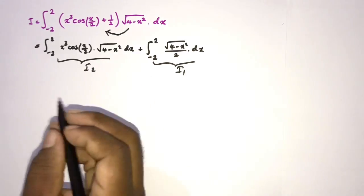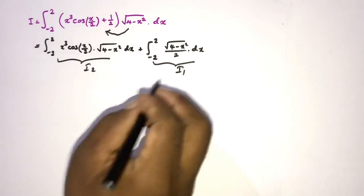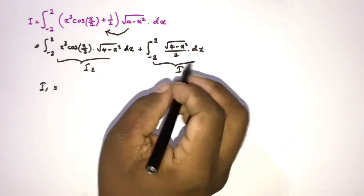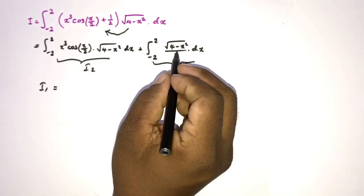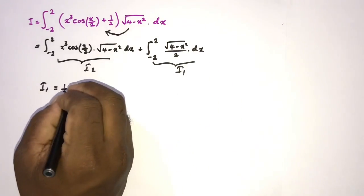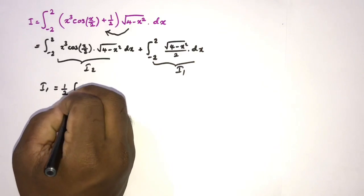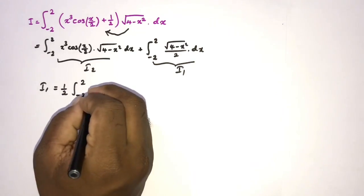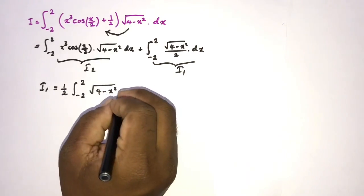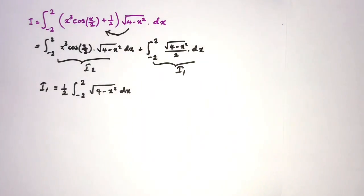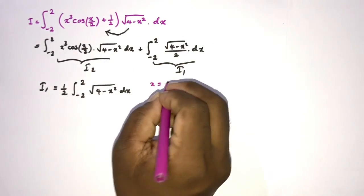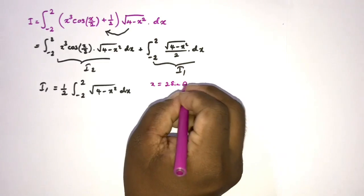We take the first integral as I1 and the second as I2. For I2, the one half is a constant we can write outside the integral sign: one half times the integral from minus 2 to 2 of the square root of 4 minus x squared dx. Now we apply the substitution x equals 2 sine of theta.